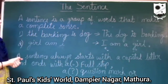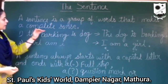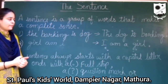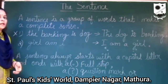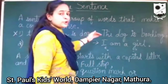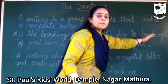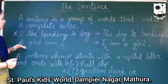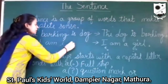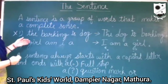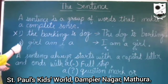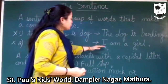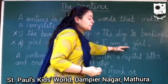I have written a few examples here. The first is 'the barking is dog.' Does this make any sense? No. The right order of the words should be 'the dog is barking.' The second example is 'girl and I a.' Does it make any sense? No. The correct order should be 'I am a girl.'